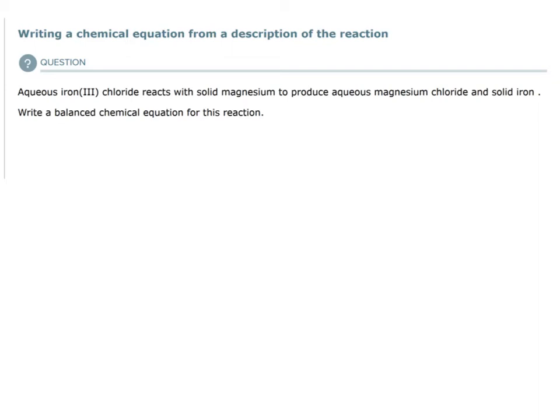This brings together things from previous chapters in chemistry: the naming of ionic compounds, how to derive the chemical formula of an ionic compound from its name, and also the different states of matter. We have solid magnesium and aqueous — how do we represent a substance dissolved in water? There are many different things being brought together for this particular topic.